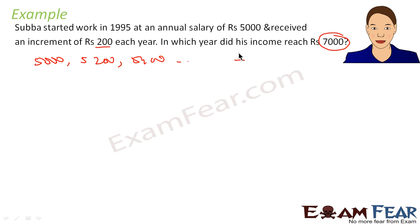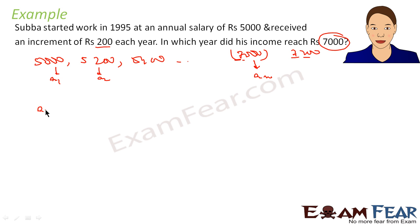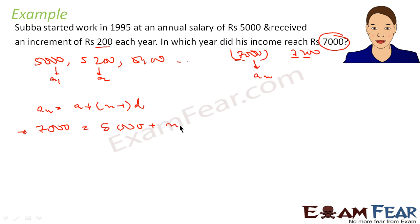Somewhere her salary reaches 7,000 rupees. We have to find the year in which it is 7,000. A1 is 5,000, A2 is 5,200, and so on — let us suppose An equals 7,000. An is nothing but a plus (n minus 1) times d. Here An is 7,000 rupees, a is 5,000 rupees, and d is 200 rupees.